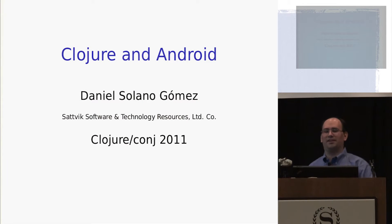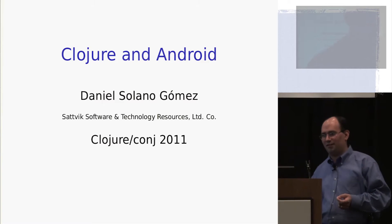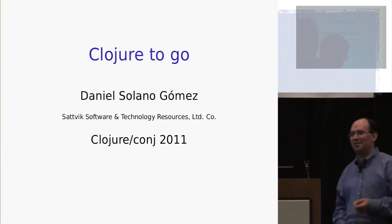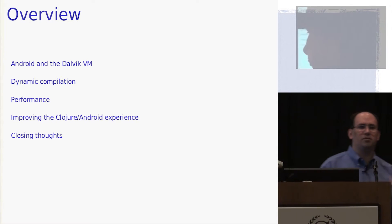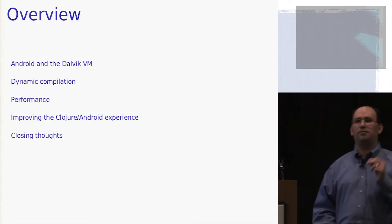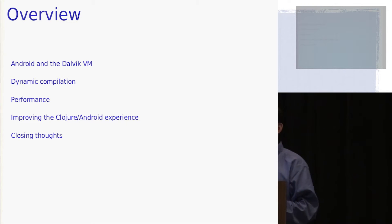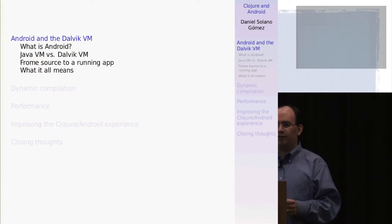Thank you. I'm going to be talking today about Clojure in Android. This could also be called Clojure in small places or Clojure to go. I'll talk a little bit about how Android and its Dalvik virtual machine differ from the Java virtual machine and what this means for Clojure. I'll talk about how I got dynamic compilation to work and I'll talk about Clojure's performance on Android and some ways that we can improve Clojure development on Android as a whole.